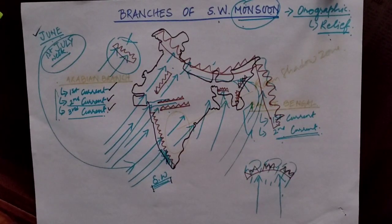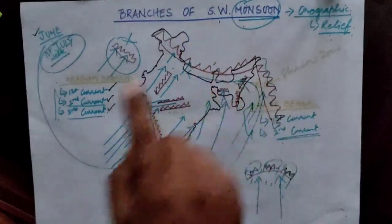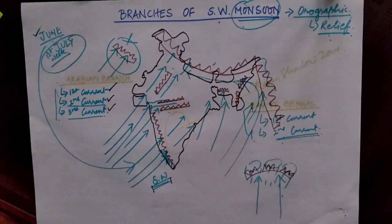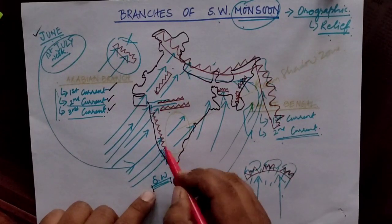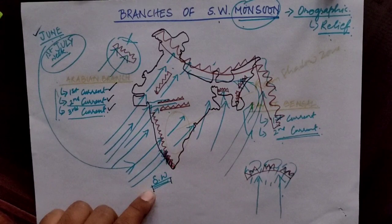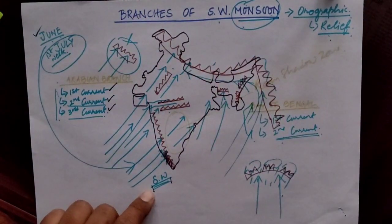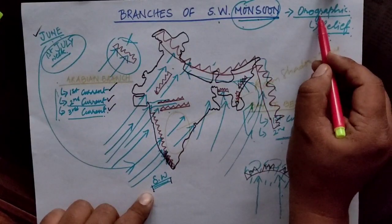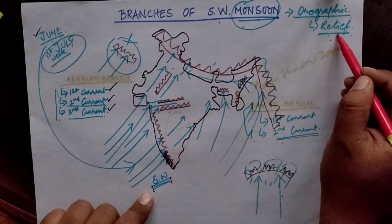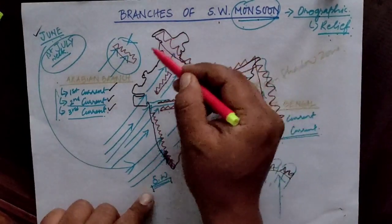The Southwest monsoon is so named because it enters India from the southwest direction — specifically, through the state of Kerala. The monsoon which occurs in our country is of the orographic type of rainfall, which means relief rainfall. I have already drawn most of the important relief features in the diagram.